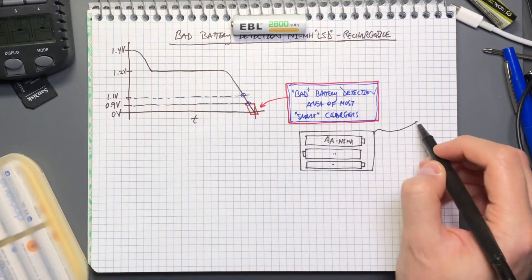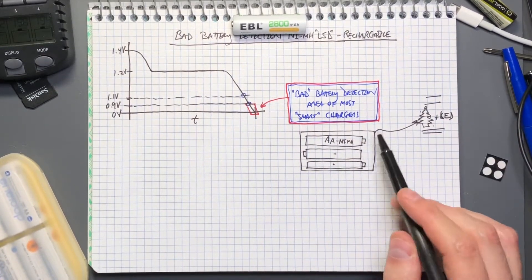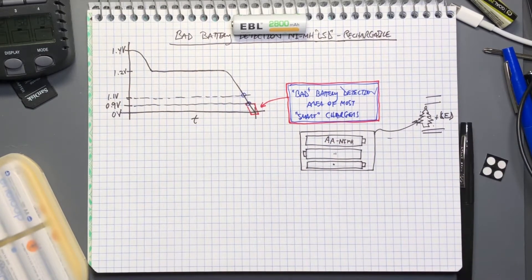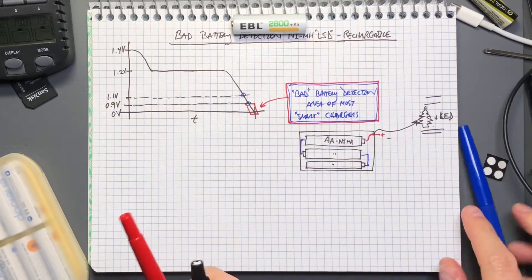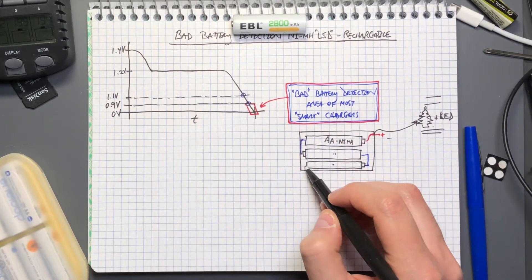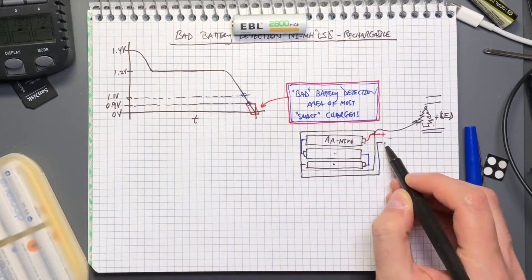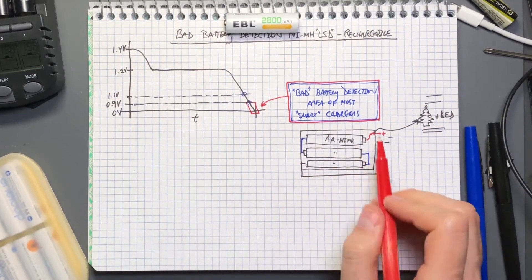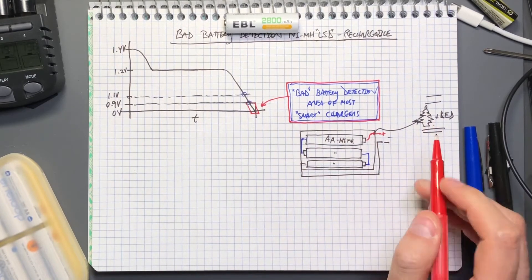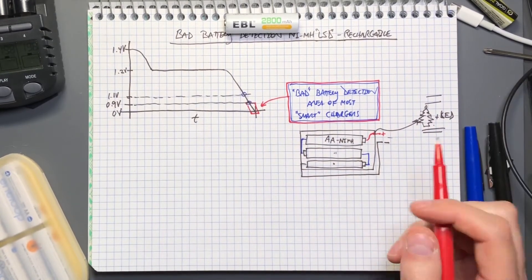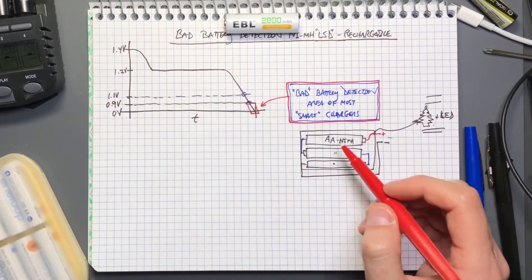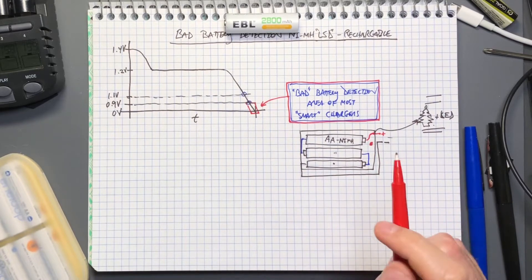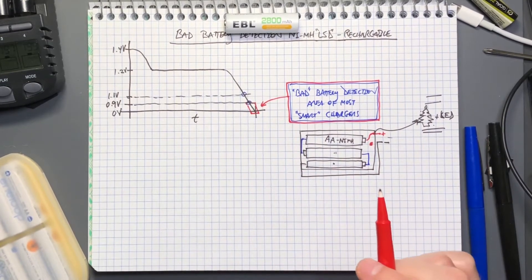You have a set of three batteries going off to your Christmas lights. In this pack, since these are wired together in series, you have your negative coming back. At least one of the batteries is not going to be charged to the same level as the other batteries. Eventually the lights aren't even on anymore.